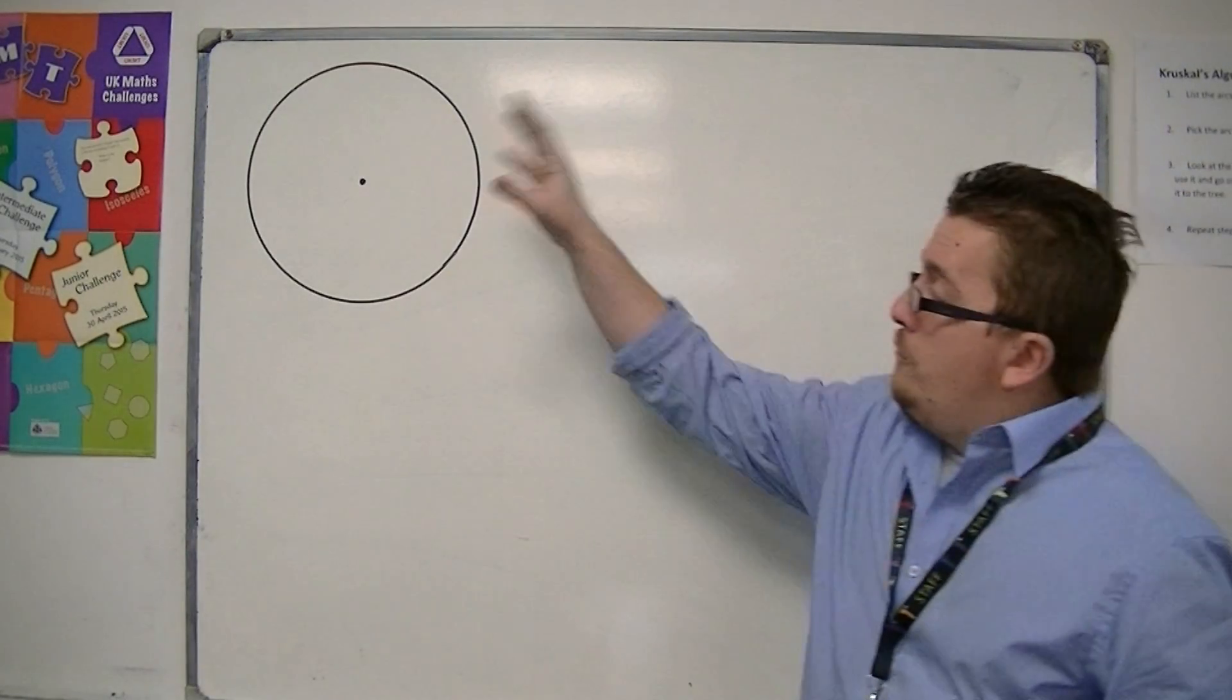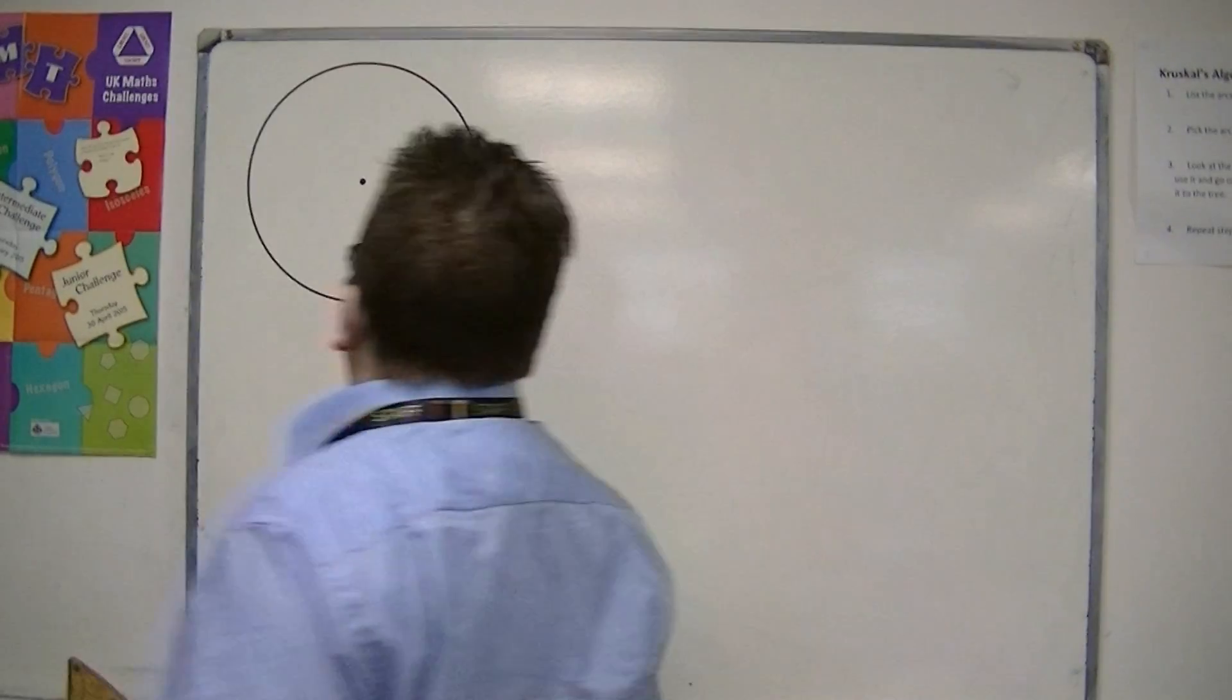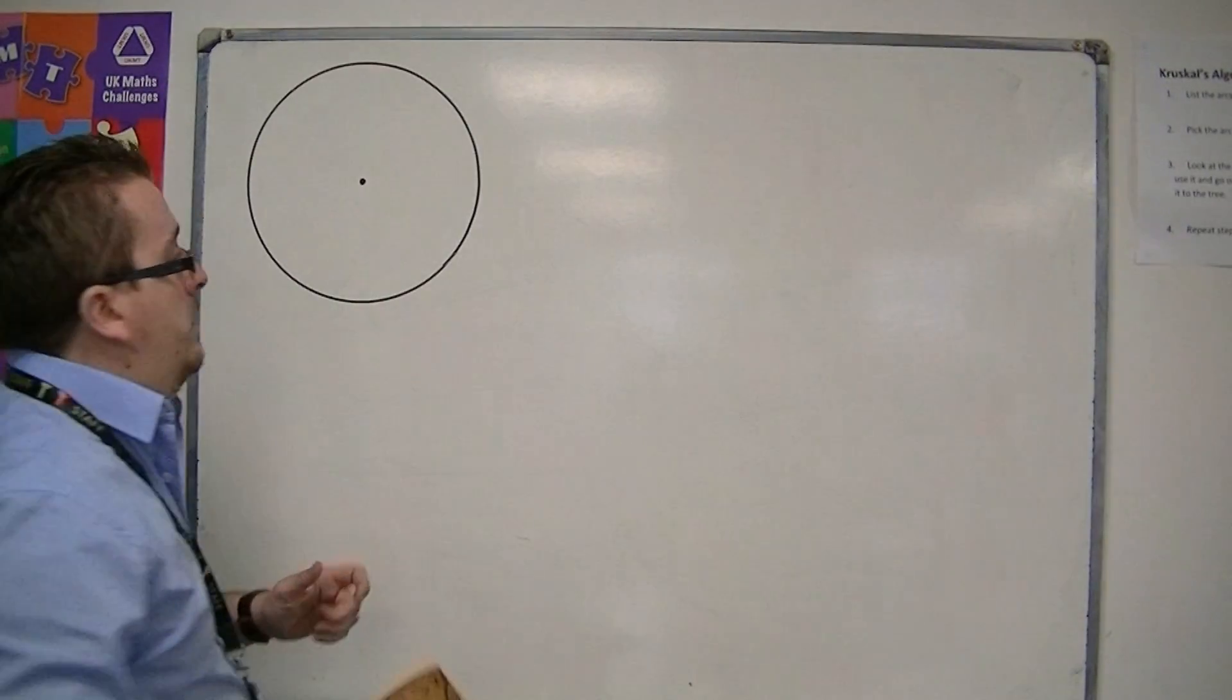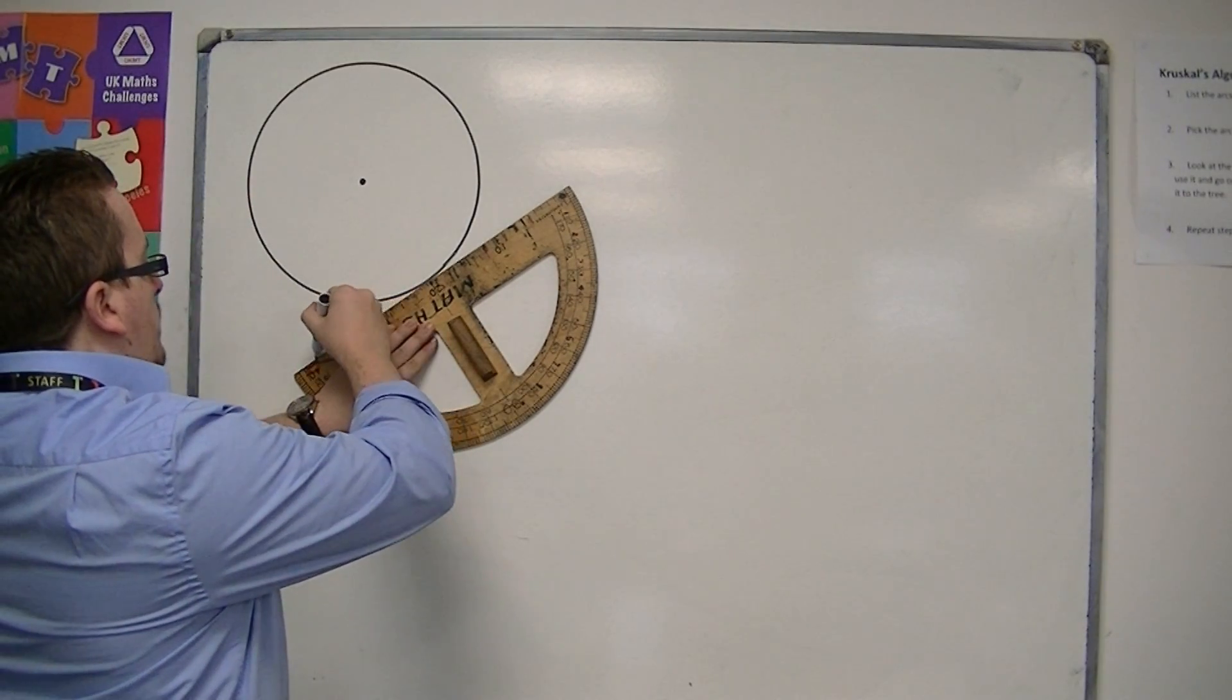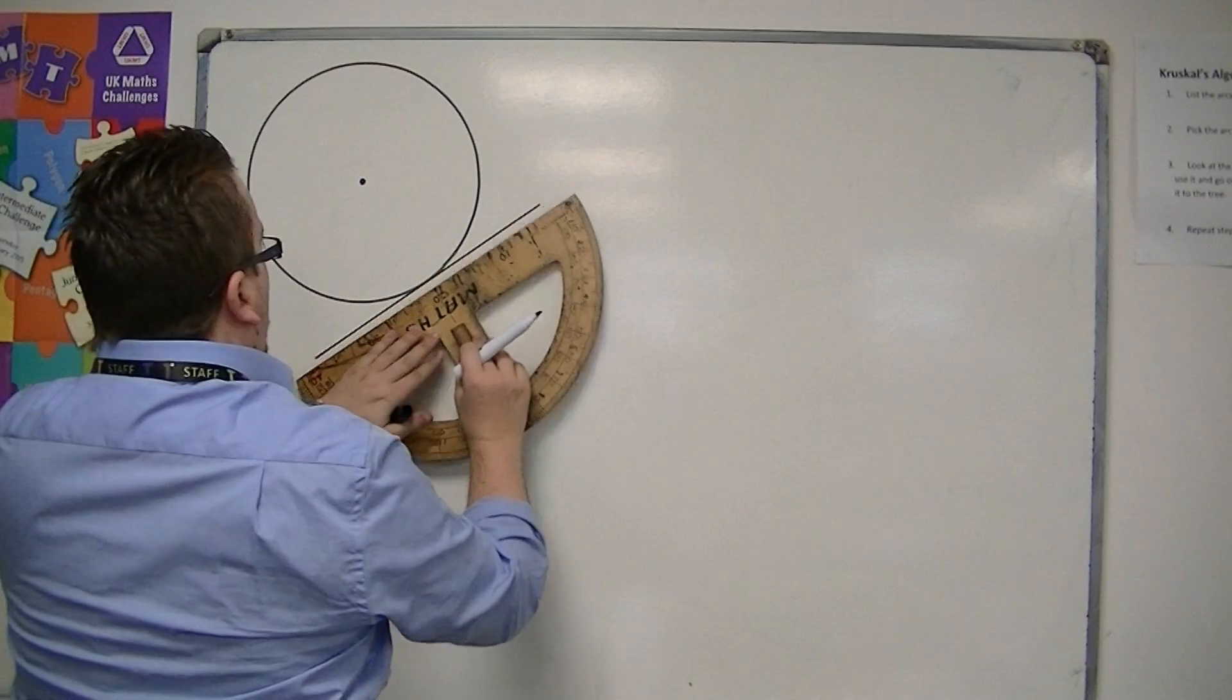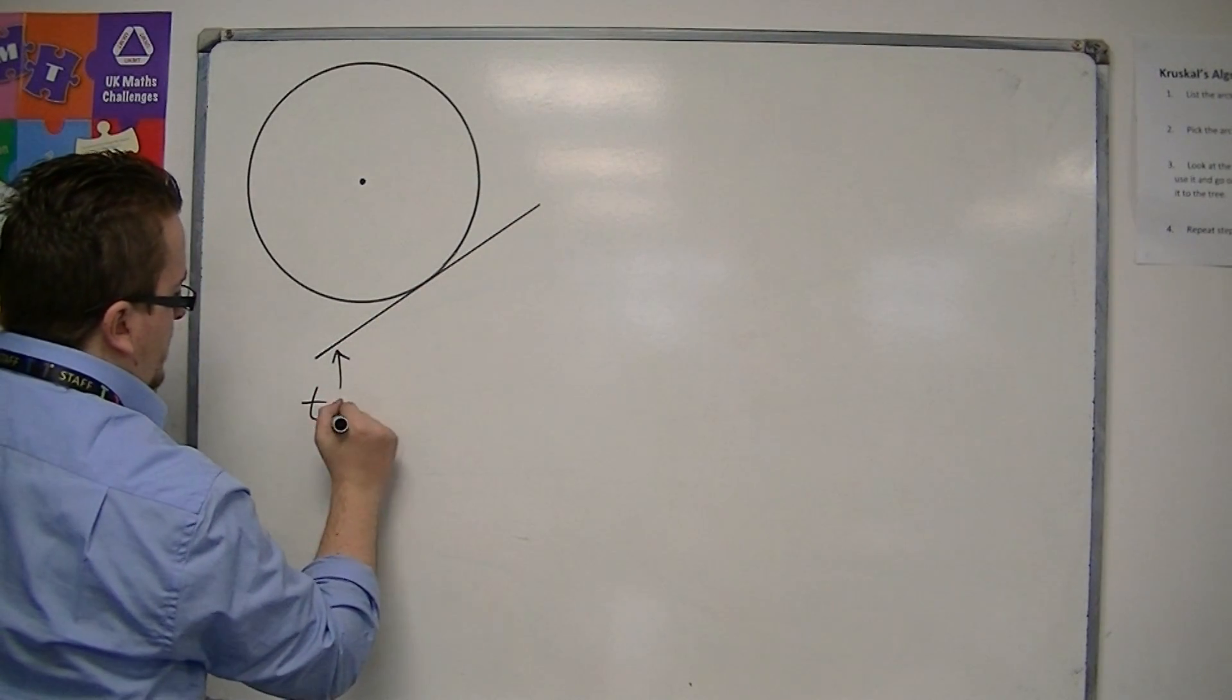So first things first, here is a circle. I've identified the centre of the circle. Now if you have a line which touches the circle at only one point, then we should know that this is known as a tangent to the circle.